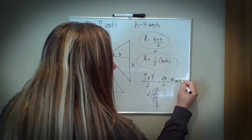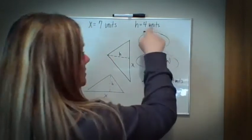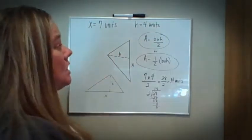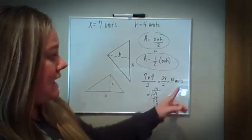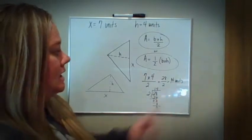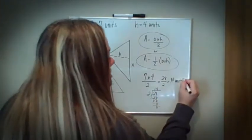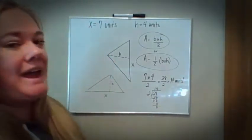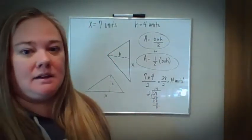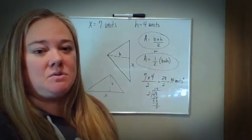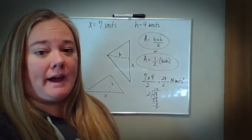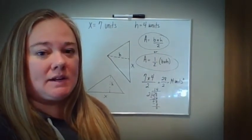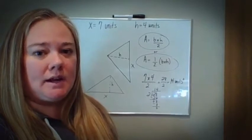Why units? Because that's what they're using — not yards or meters or feet, but units. So the answer is 14 units squared because we're looking at area. Base times height divided by two, or one half base times height, is how you find the area for any triangle.